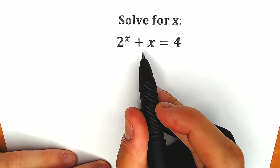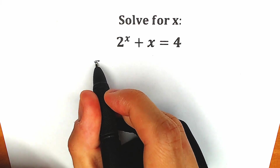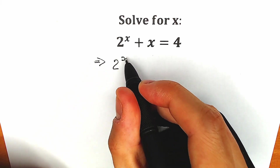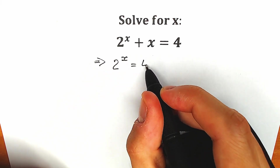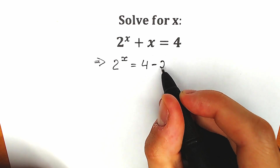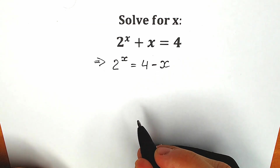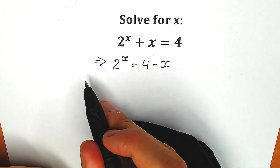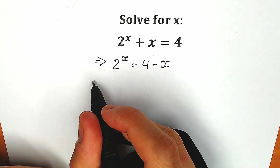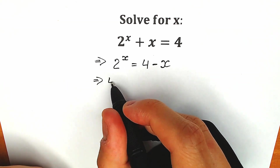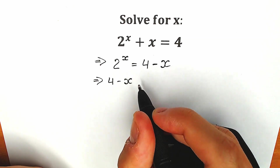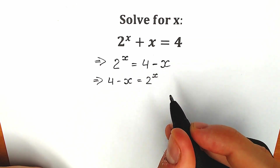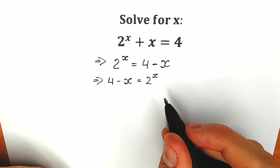First of all, let's subtract x from both sides. As a result, on the left side we're going to get 2 to the power x, and on the right side we'll have 4 minus x. For better understanding, let's swap positions and write 4 minus x on the left side and 2 to the power x on the right side. I hope you understand this first step.